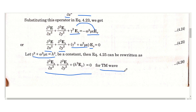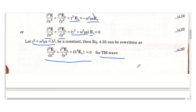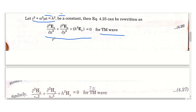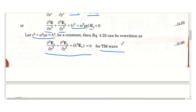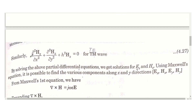Similarly for the TE wave, by replacing Ez with Hz, the wave equation becomes: (d²Hz/dx²) + (d²Hz/dy²) + h²·Hz = 0. This is the TE wave equation.